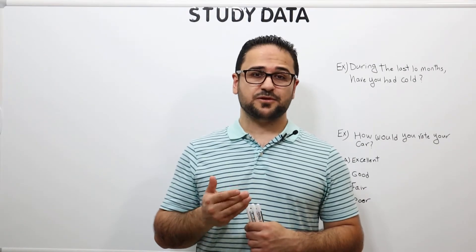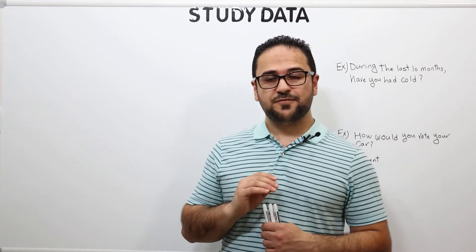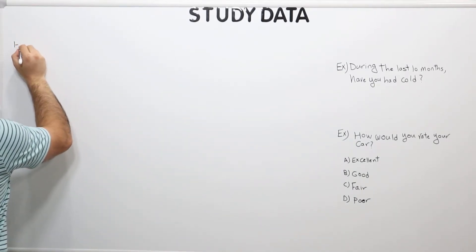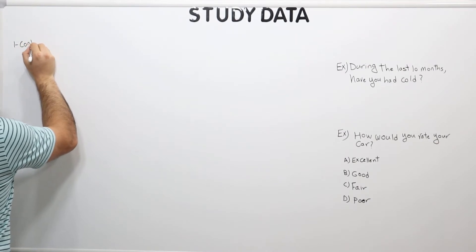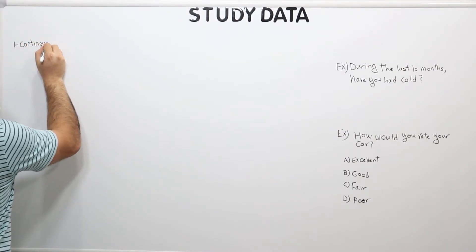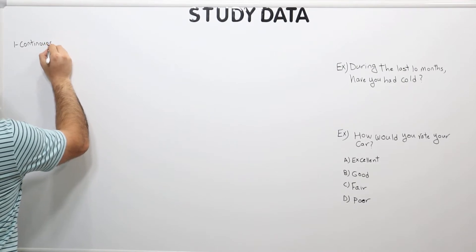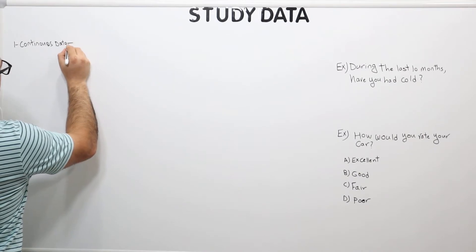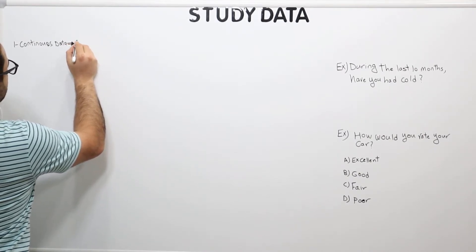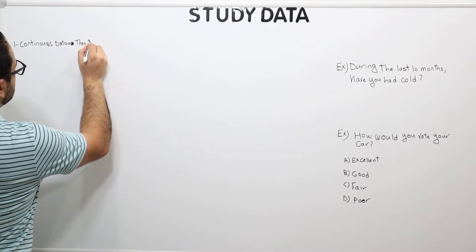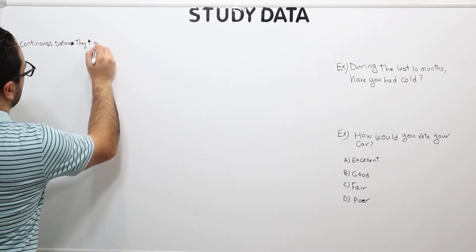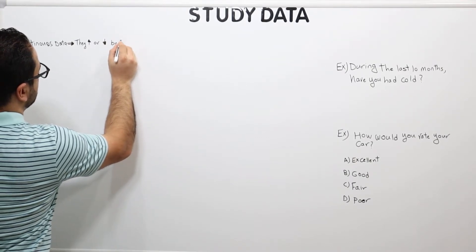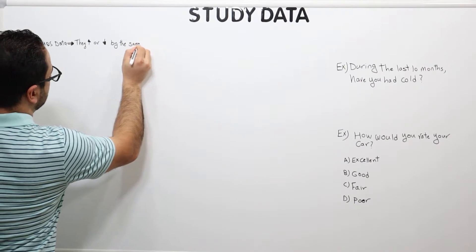There are different types of study data. The first type is called continuous data. These data increase or decrease by the same amount.